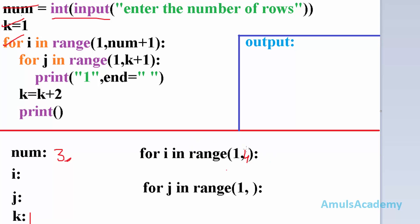The range one to four gives output one, two, three. So i takes the first value, i equal to one. Next it enters the inner for loop for columns, where j is the variable and the range is one to k plus one. Since k value is one, that is one plus one equals two, the range is one to two — one is included, two is excluded — so the output is just one, meaning j value is one.